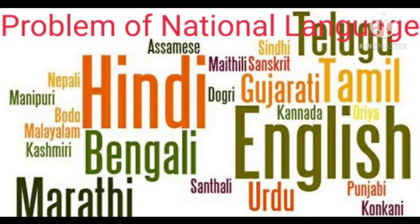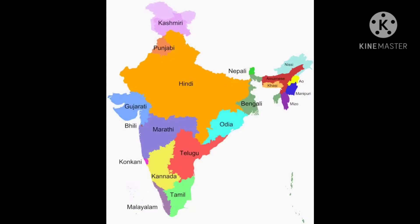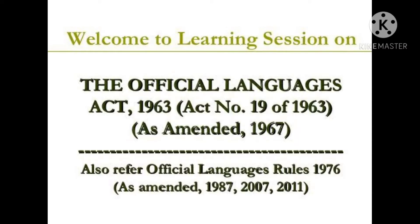Now let's talk about the problem of national language. India is a country with diverse languages. Our leaders wanted a national language to unite people of different religions. It was decided that Hindi would be the common language of free India. With the formation of linguistic states in India, regional languages had to be recognized. So 22 languages were recognized as national languages. By the Official Language Amendments Bill of 1967, the knowledge of Hindi or English has been made compulsory for eligibility to all central government services.